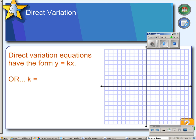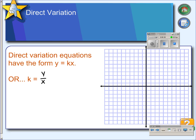A direct variation equation is one that has the form y equals kx. And if you were to take this equation and solve it for k, you would find that k is equal to y divided by x.